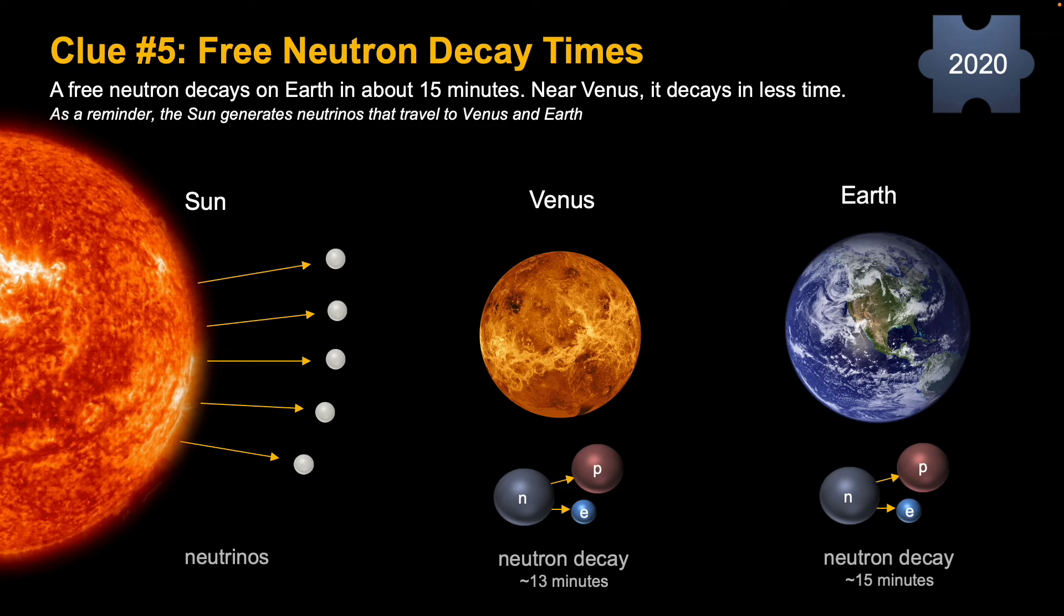So back to the neutron. When a neutron is freed from an atom, i.e. a free neutron, it decays on Earth in about 15 minutes. Now this was thought to be a constant property of the universe. But in a recent clue, an experiment was done in a satellite around Venus measuring the neutron's decay time, and it's less than 15 minutes, closer to the sun.